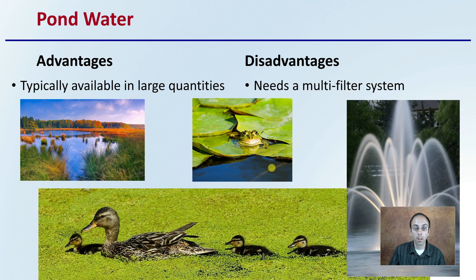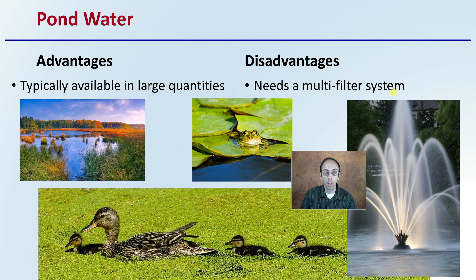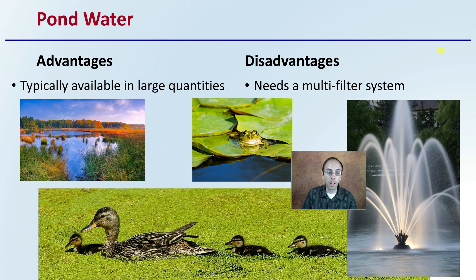First off, pond water. Looking at an irrigation pond, the advantage of irrigating from pond water is that it's typically available in large quantities — we need to remember we're going to need the most water during times of drought. The disadvantage is that it typically needs a multi-filter system. You can't just throw a pump in and pump out of it in most cases; you need some sort of multi-filter system to remove particulate or to ensure you're not spreading any algae that may be growing in that water.